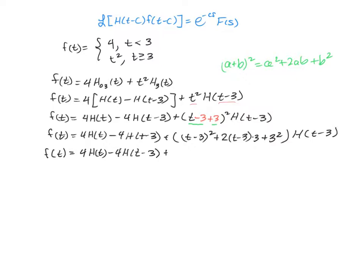And then we're going to distribute that h(t-3) back here to all three of those terms in the parentheses. So we're going to have (t-3) squared times that h(t-3), and then that 2 and 3 multiplied to make 6 times the (t-3)h(t-3), and then that 3 squared is 9 times h(t-3).